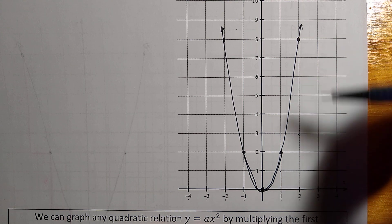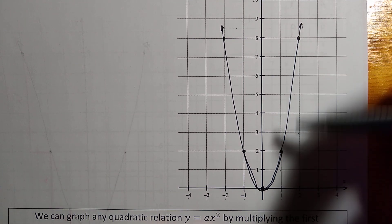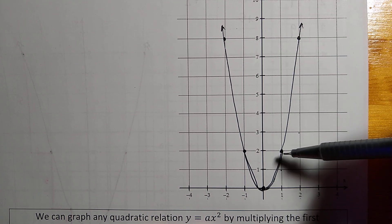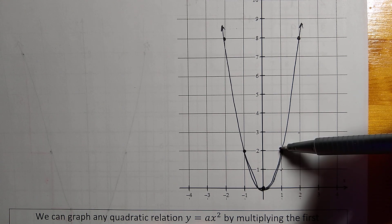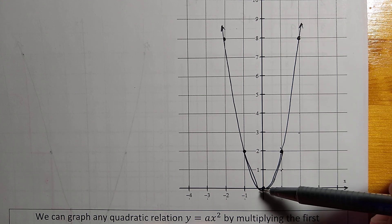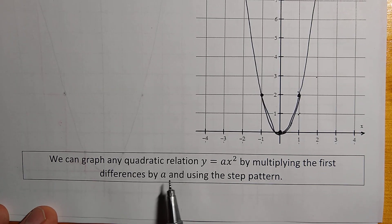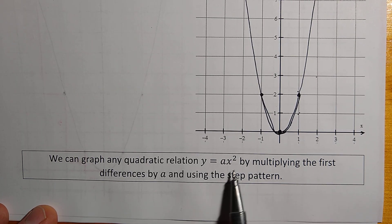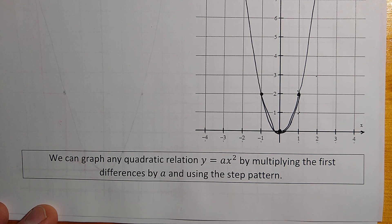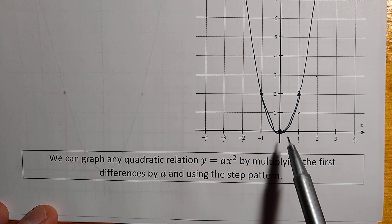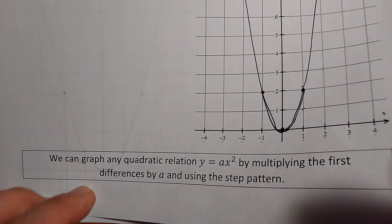Now this one has been stretched vertically, so it is sort of skinnier looking, but especially it is taller. Every y point has been moved twice as far from the x-axis. And this one, of course, stayed put because it was on the x-axis. So at the bottom here, we can graph any quadratic relation that is in this form by multiplying the first differences by this value a, and then using the step pattern. Over 1, up 2 in this case instead of 1.